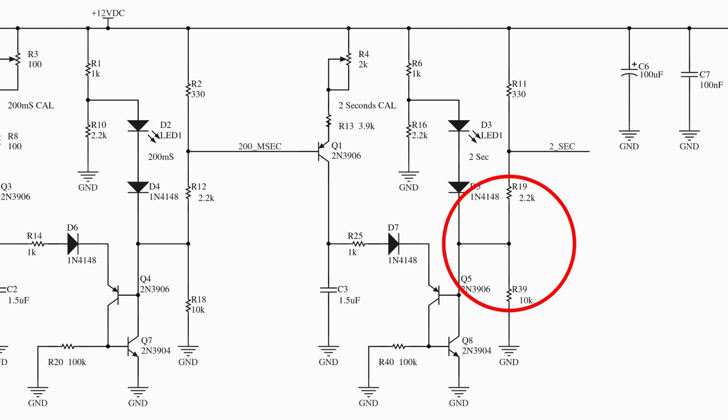When the previous stage triggers and resets, in this case that would be Q7 going into conduction, it creates a voltage drop across R2. R2 drives the current source which is Q1, R13, and R4. That current source outputs a constant current into capacitor C3 charging it up.